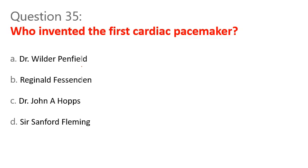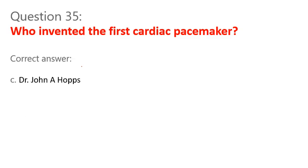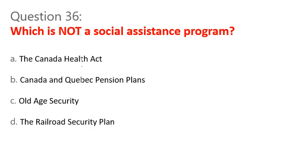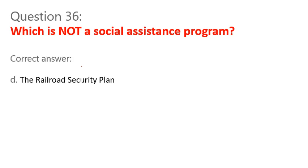Question 36. Which is not a social assistance program? A. The Canada Health Act. B. Canada and Quebec pension plans. C. Old age security. D. The railroad security plan. Correct answer: D. The railroad security plan.